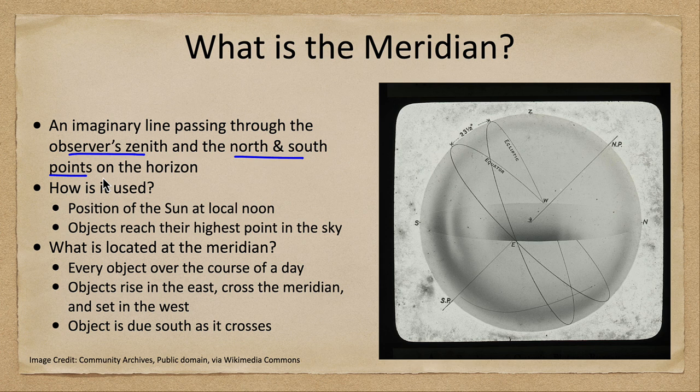The meridian is actually specific to your location. What the meridian is for one location on Earth, or an object crossing the meridian, will be very different for a person on another part of the Earth. If you are farther east or west of somebody, you won't see the exact same object on the meridian.